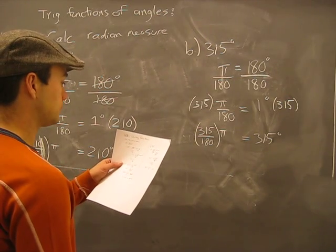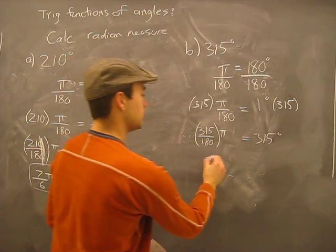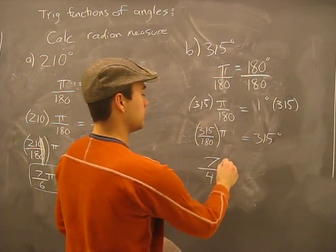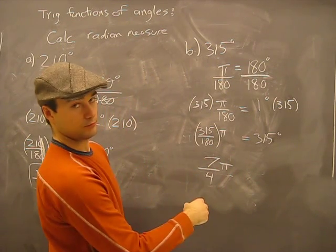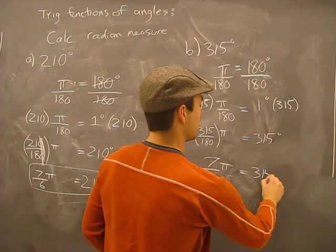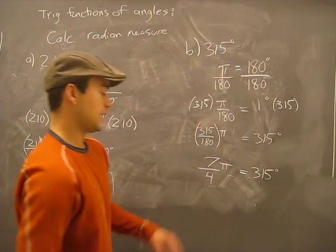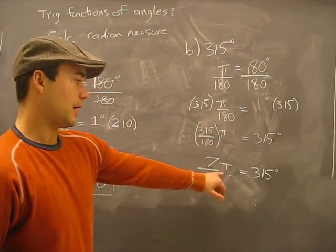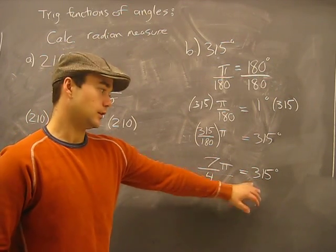What is that equal to? This, believe it or not, reduces down to 7 over 4. So you can call me on that one if you want. I've done this in advance. So what this means is that 7 over 4 π radians equals 315 degrees.